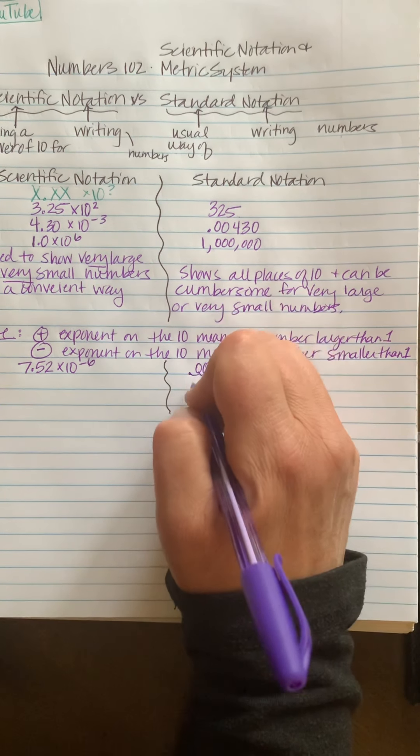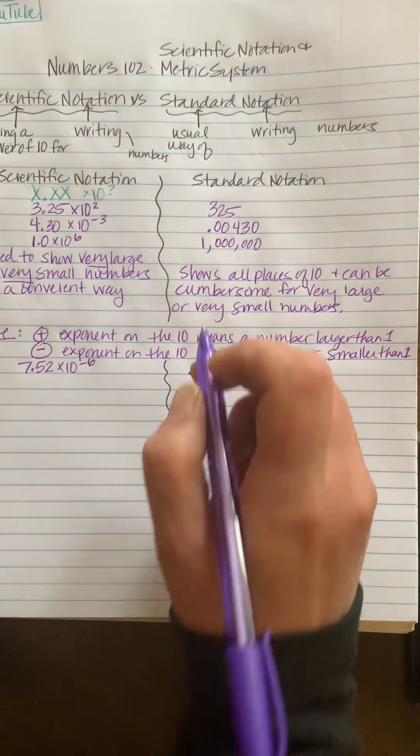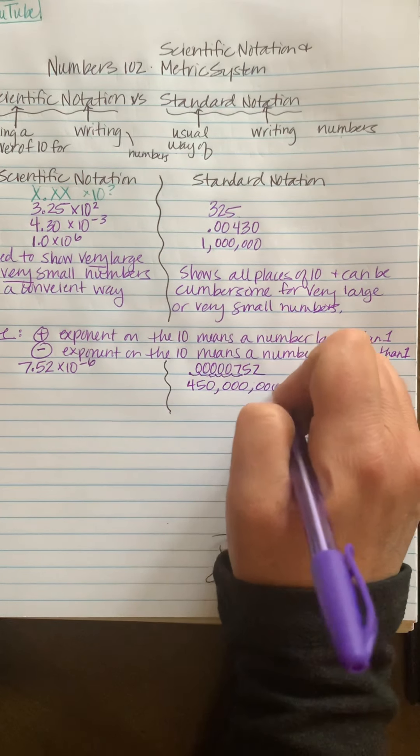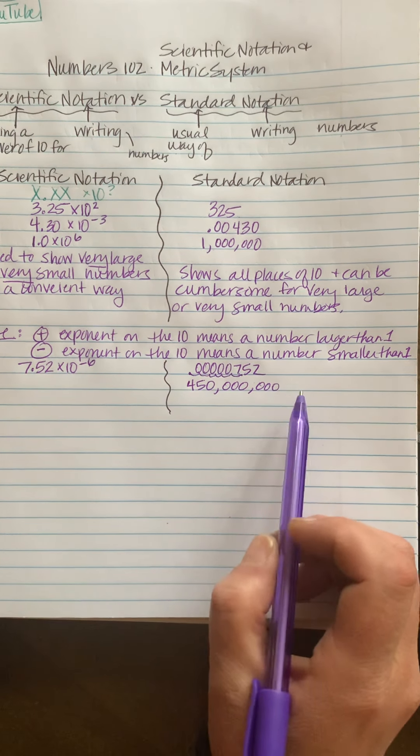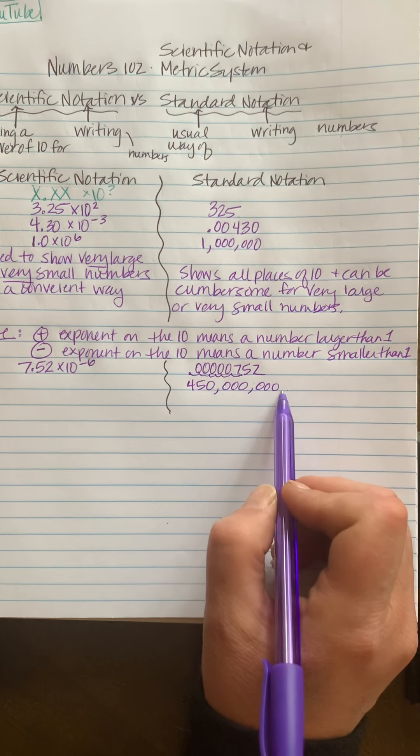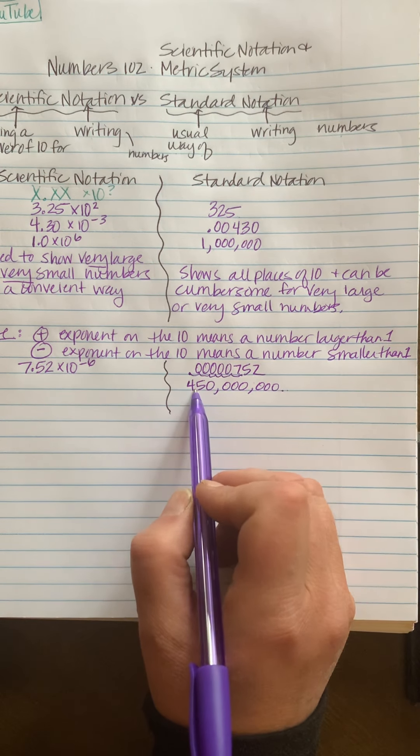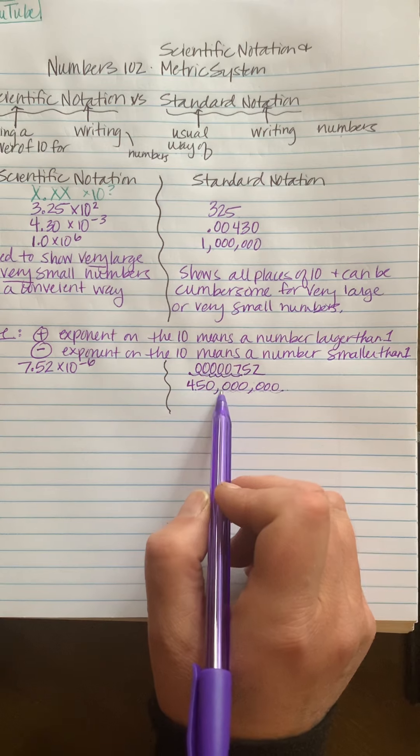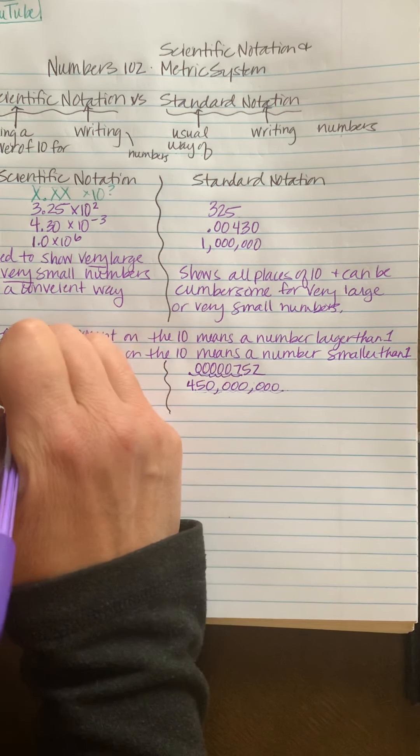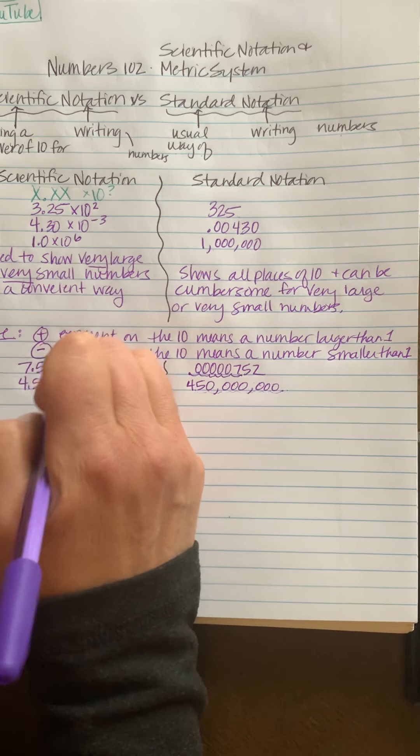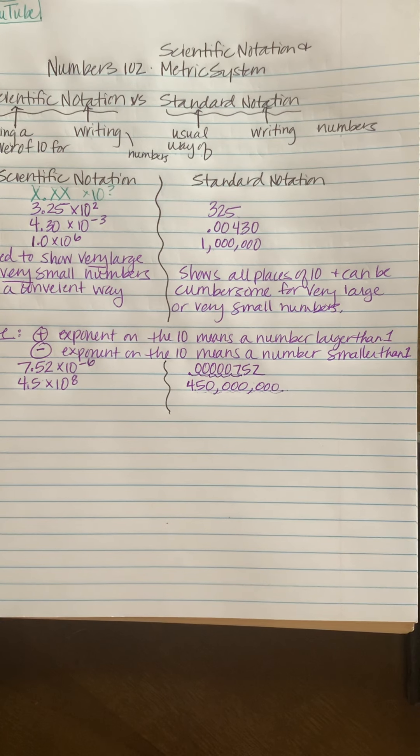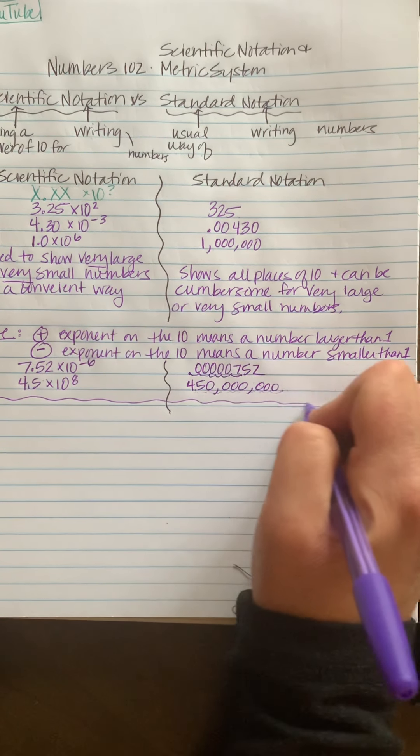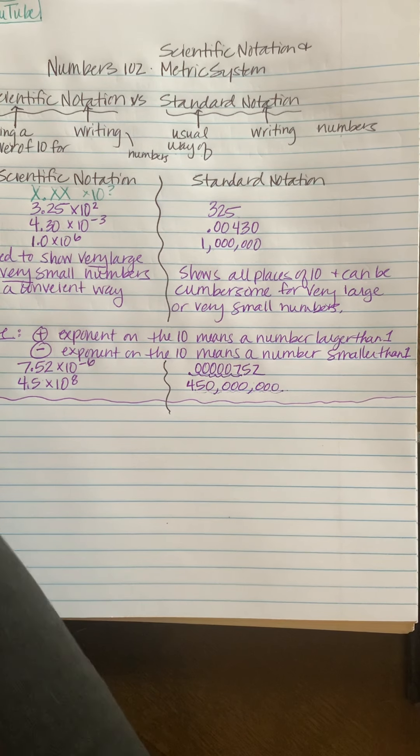And I'll do another example of a very large number, we'll say 450 million. I think that's right, and we know that the decimal is here at the end. So in order for us to get the decimal here after the four, we have to move one, two, three, four, five, six, seven, eight spots. So this would be 4.5 times 10 to the eighth power. All right, so that is a brief introduction of scientific notation.